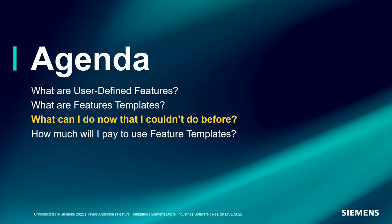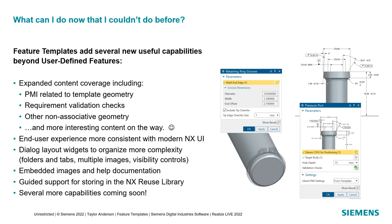So the big question is: what can I do now that I couldn't before? Feature templates add some new things. We've talked about content coverage — moving beyond just modeling features into things like PMI and requirement checks, and also other non-associative geometry. If you've got points, collections of points, or curves that you want to collect up and reuse, this will be an easy way to do that as well. There are other interesting content types on the way in future releases too.